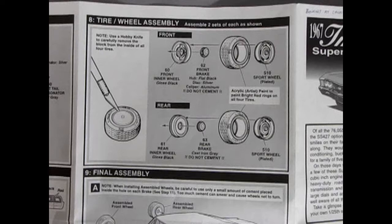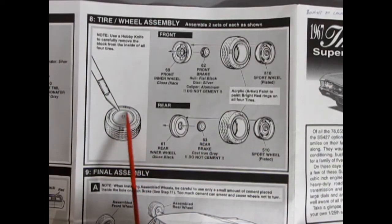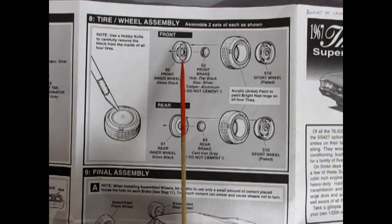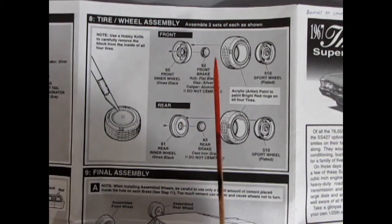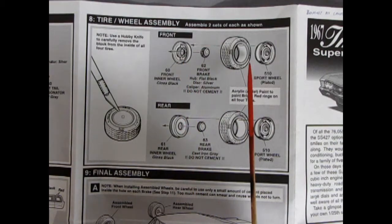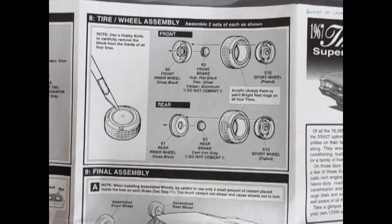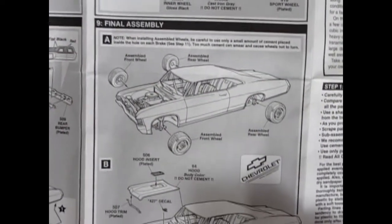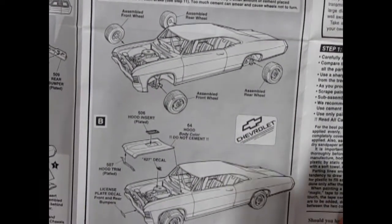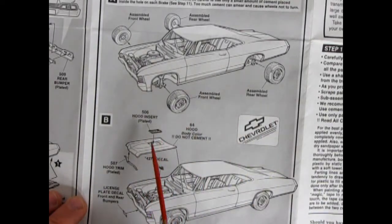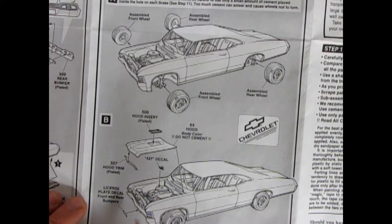Then we get our wheel and tire assembly. This, of course, has the blank in here, so you have to cut that out of the tire. You got your wheel backs, your front brake hubs going in there, and then the tire and your sports rally wheel. And then finally, the last panel shows the whole thing going together with the wheels being assembled, the hood with the chrome insert and the chrome trim, and your 427 decal going on your air cleaner, as well as your license plates.